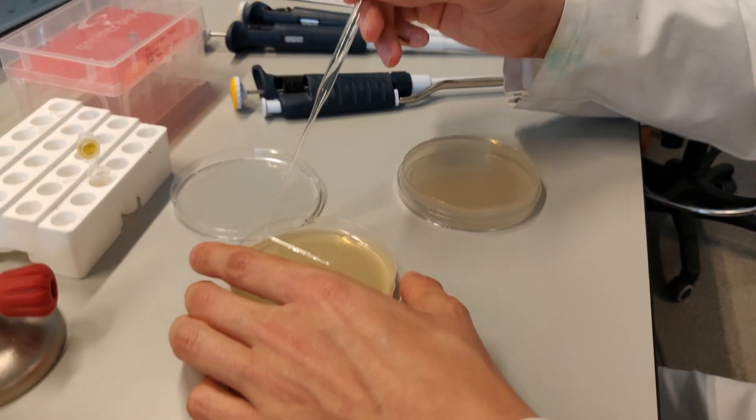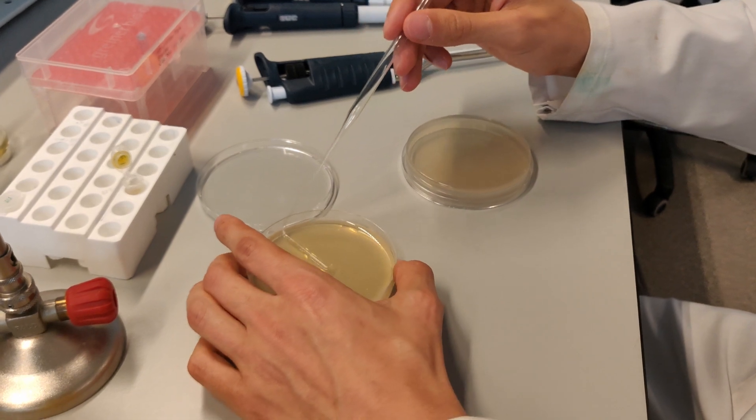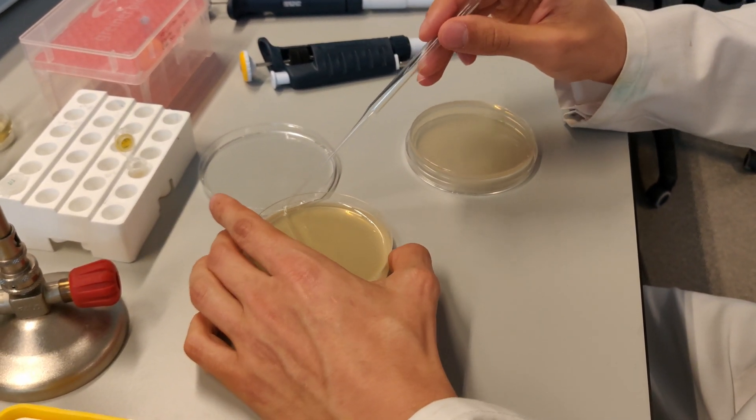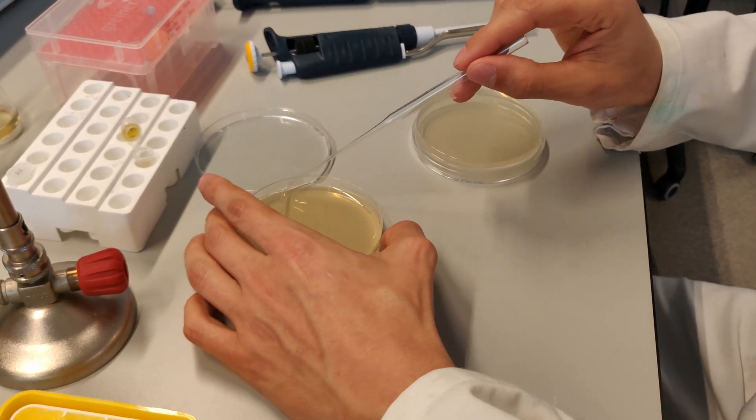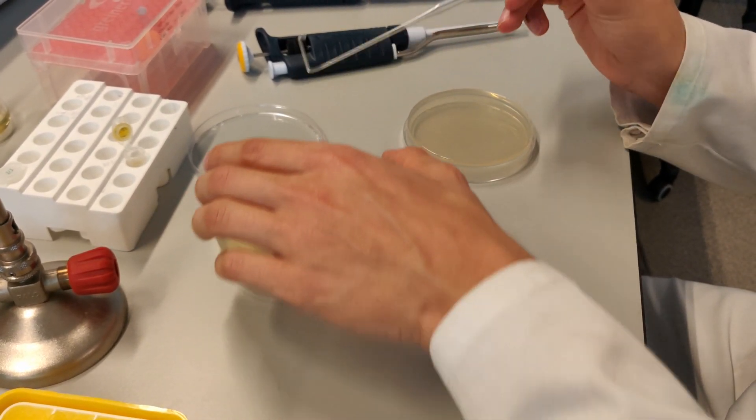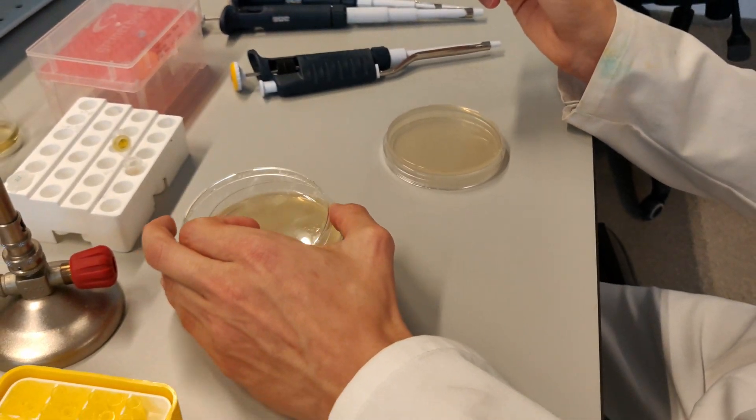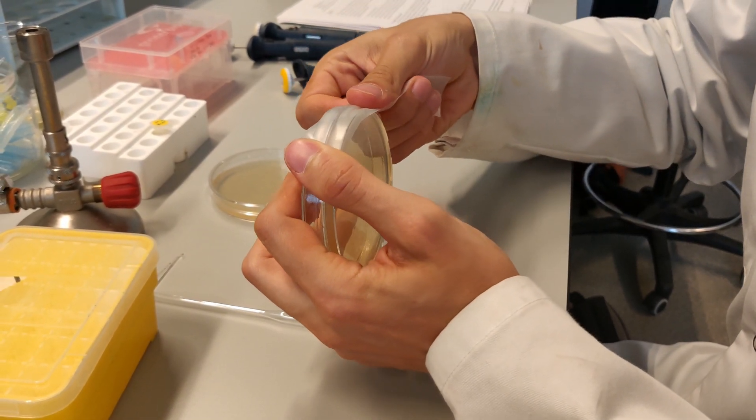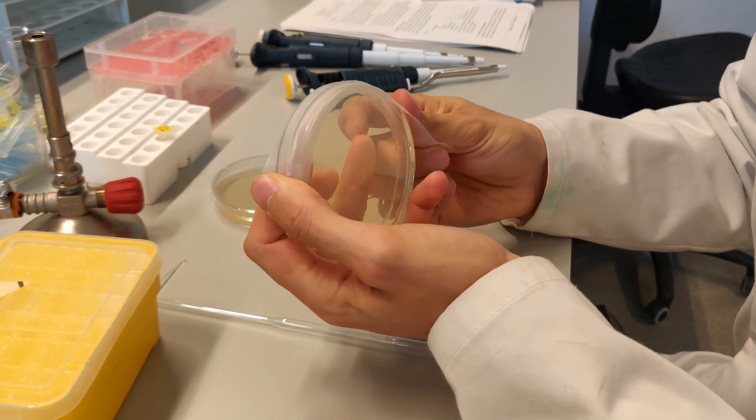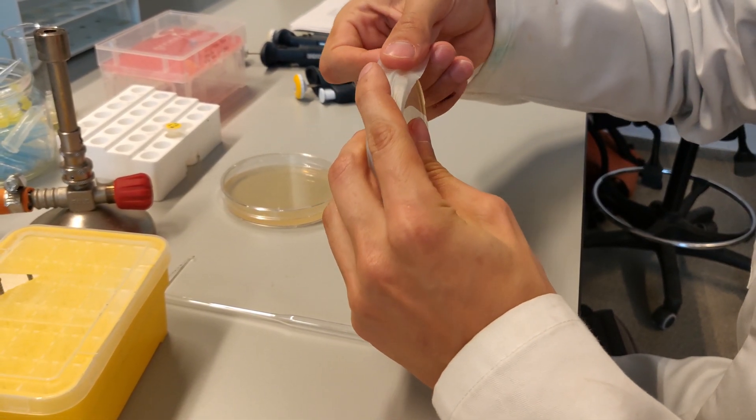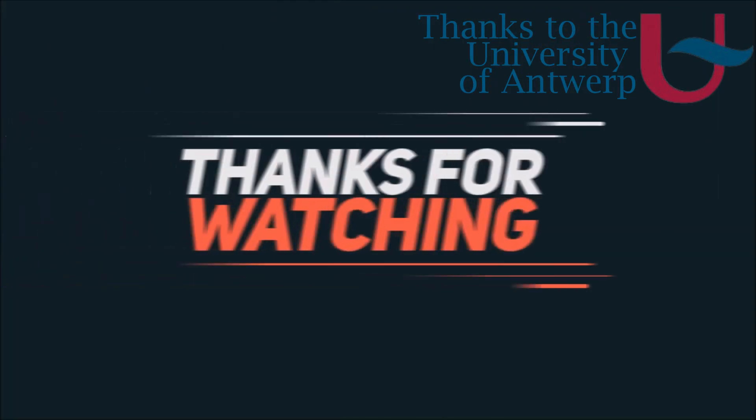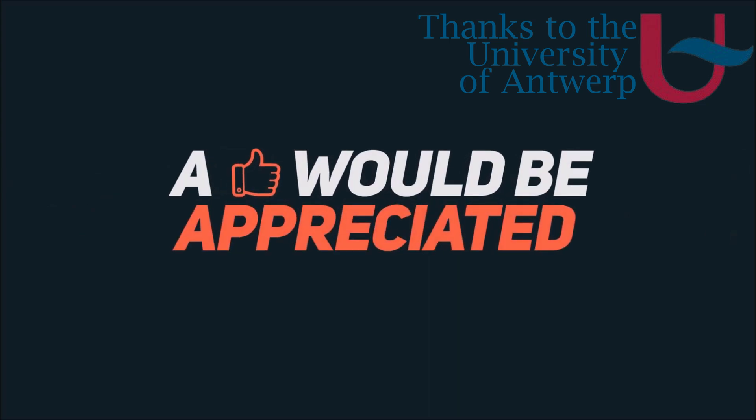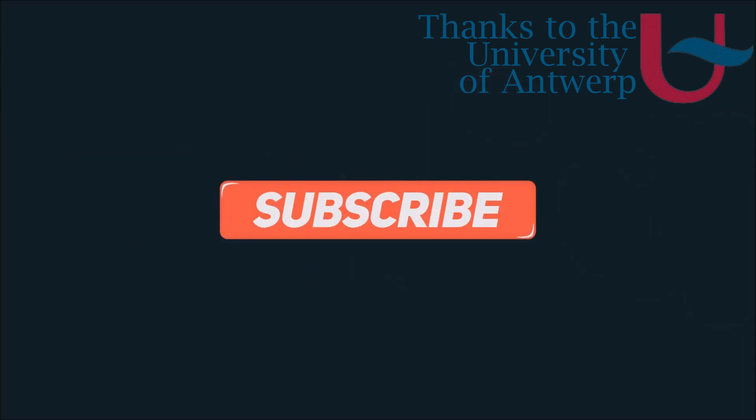Finally incubate overnight at 37 degrees and normally colonies that can express the yellow fluorescent protein will now grow. Thank you for joining us.